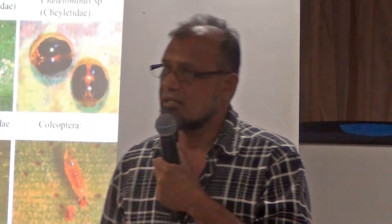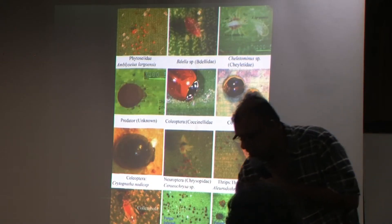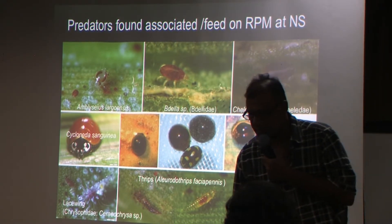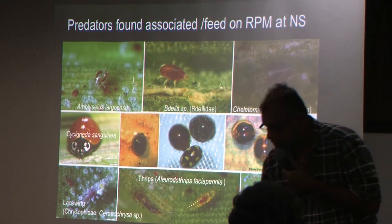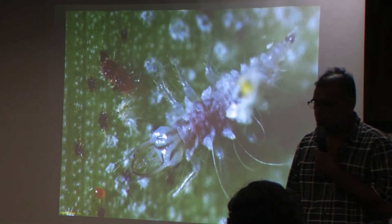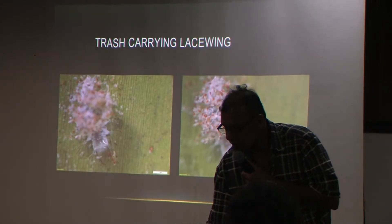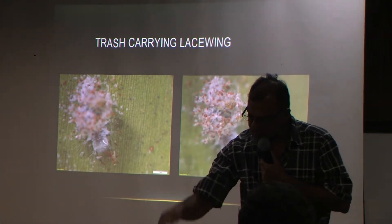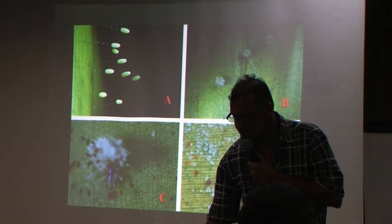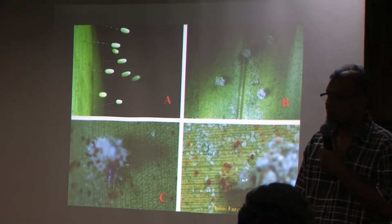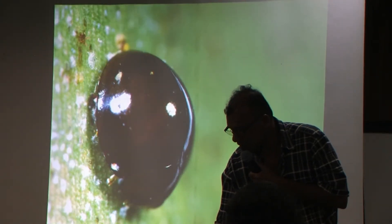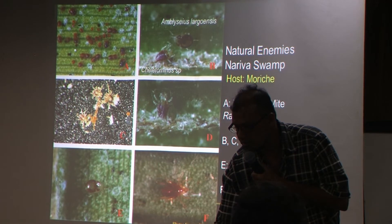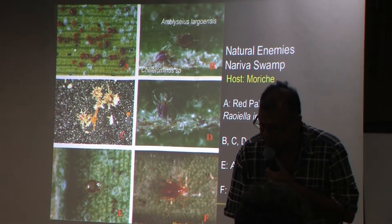Moving to biological control — there are a number of biological agents found associated with the red palm mite and other pests. One very important one is the lacewing, a very effective feeder. We normally refer to it as the trash-carrying lacewing because it will feed and throw the palm mite on top of its back. You can get a very high number of eggs on the leaves. There are also other feeders like beetles and other natural enemies found associated with the red palm mite, especially those found on the Moorish palm.